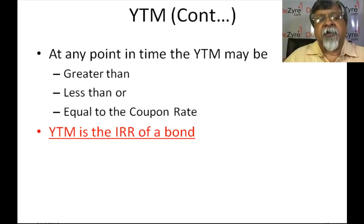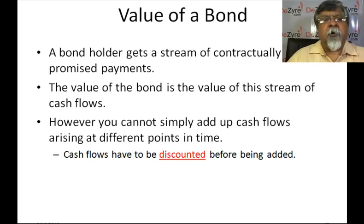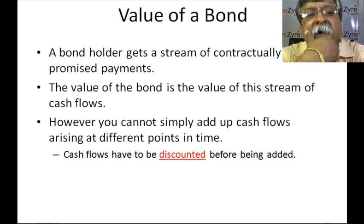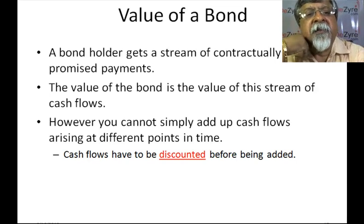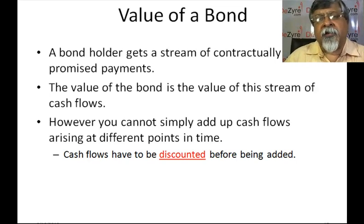How do we value a bond? A bondholder will get a stream of contractually promised payments, so the value of the bond should be the value of the stream of contractually promised cash flows. The value of any security is the value of all cash flows emanating. However, you cannot simply add up cash flows arising at different points in time. This is because money has time value. Therefore, every cash flow has to be discounted before it is added.